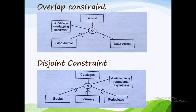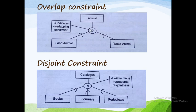For example, one good example is animals. There are land animals and water animals. Crocodiles also live on land and in water. Frogs are also called land animals as well as water animals. So this is the best example for overlap constraint — here the animal is the supertype, and land animal and water animal are subtypes.